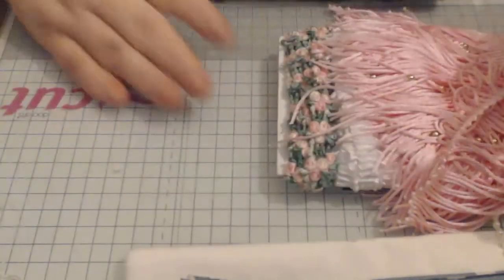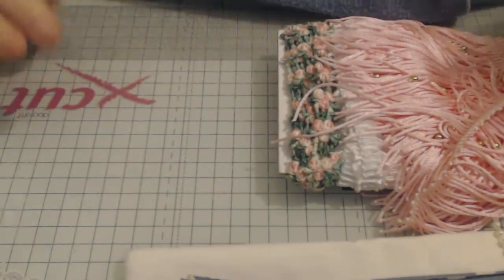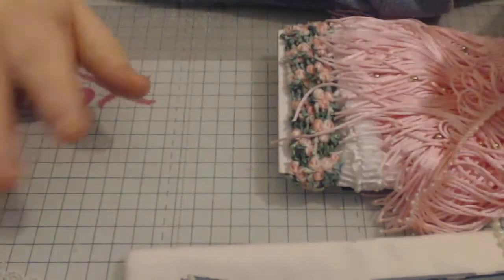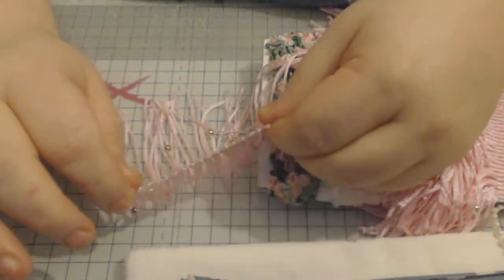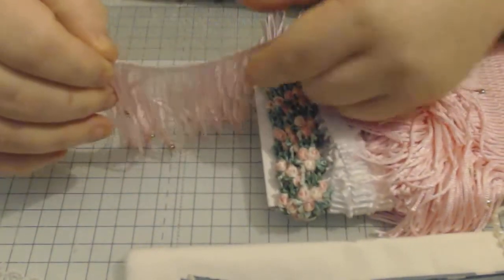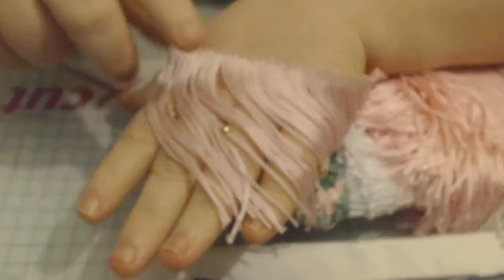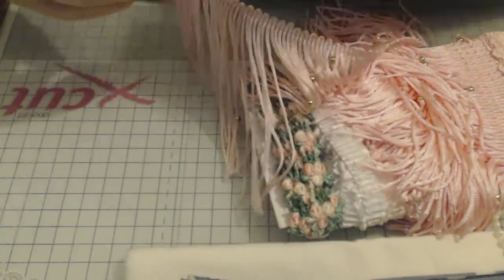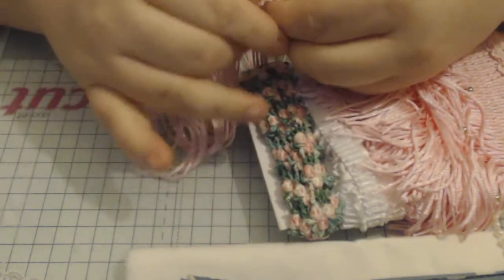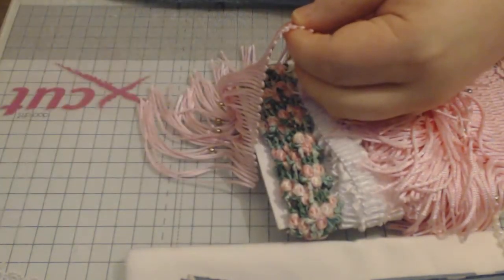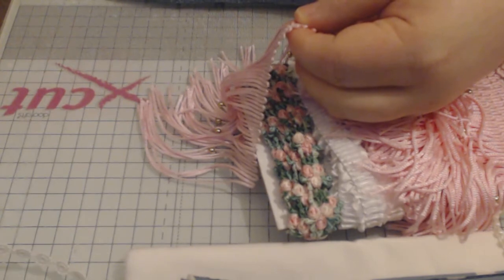Hi everyone, I'm coming on quickly to make the fastest tassel you will ever see. It is using fringe trim. Now I take the gold beads off it, but I'm not going to do that for this video. I just want it to be quite quick so you can see it.